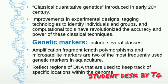The third tool is genetic markers. There are many classes of genetic markers, but in aquaculture we use two main types: Amplified Fragment Length Polymorphism (AFLP) and microsatellite markers.